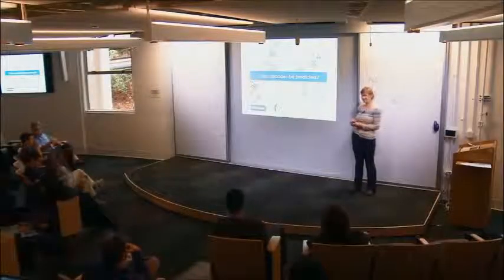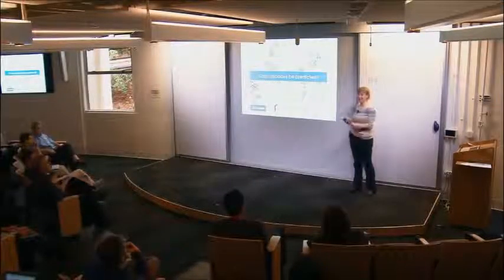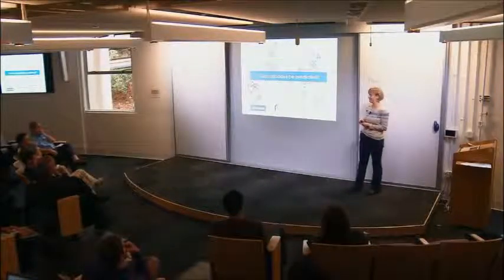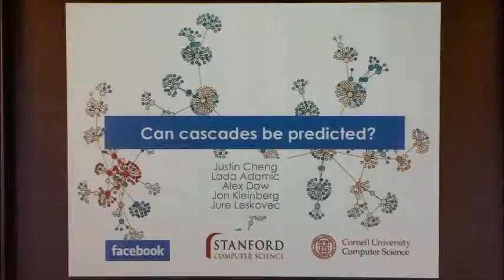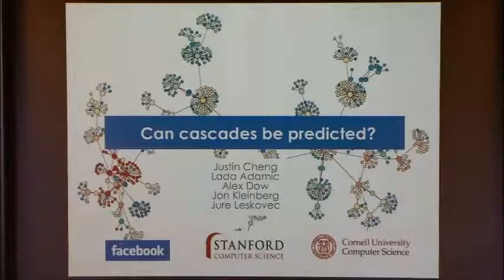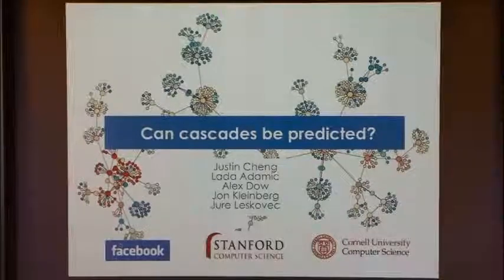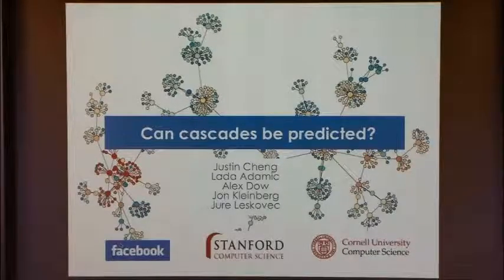Thanks for having me here. It's been a really fun workshop so far. What I'll talk about is Justin Scheng's summer research internship at Facebook, where he examined the problem of how predictable cascades are. This is joint work with Alex Dow and Jure Leskowitz and John Kleinberg.